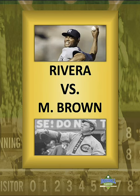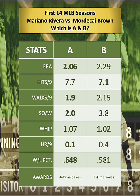Mariano Rivera versus Mordecai 'Three Finger' Brown, as we go way back — take you 60 feet, six inches away — based on the first 14 seasons of their careers. One owns Stat Column A, the other is Stat Column B.